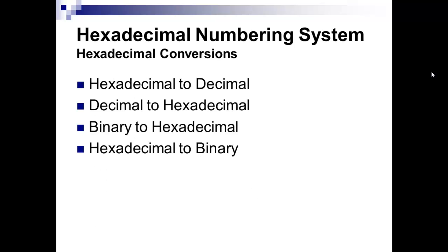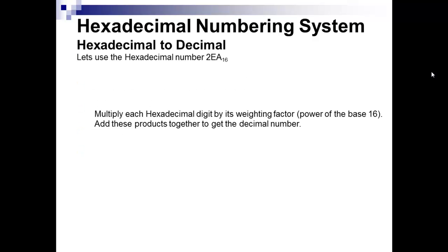So we're going to talk about hexadecimal to decimal, decimal to hexadecimal, binary to hexadecimal, and hexadecimal to binary. The good thing is the methods are exactly the same as what we've done before. It's just the numbering system has changed and you have to deal with that A through F thing.